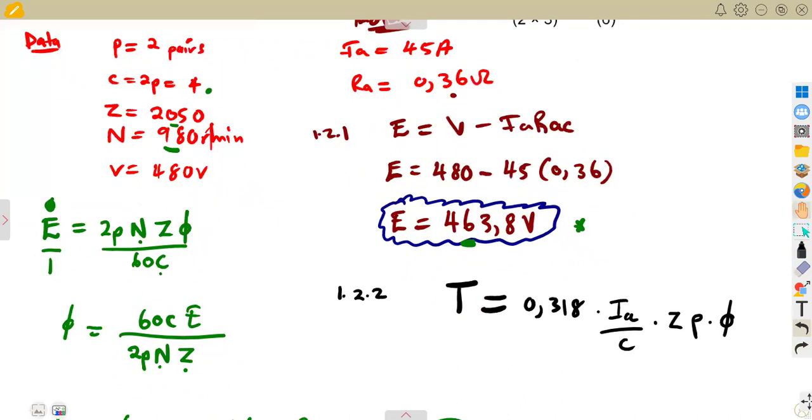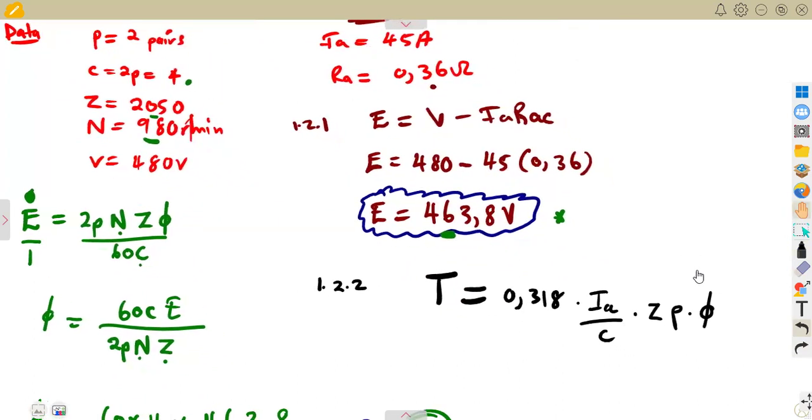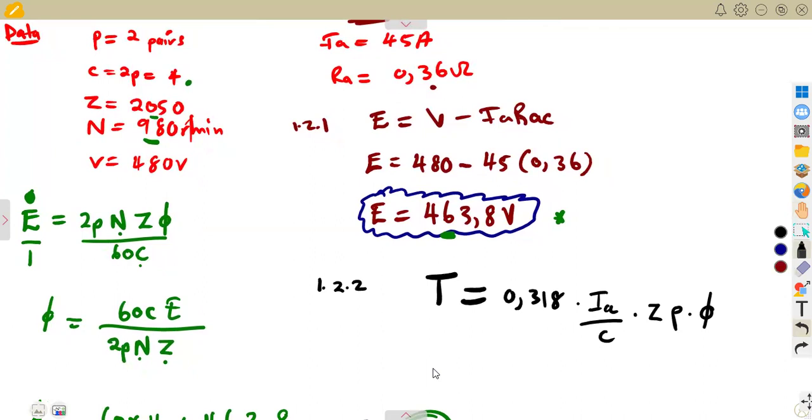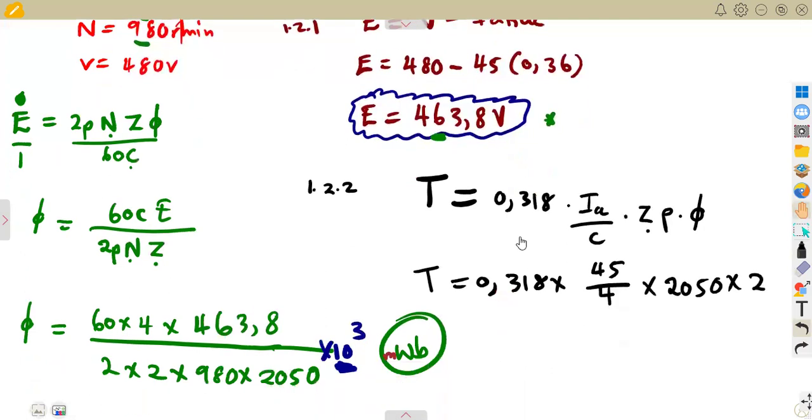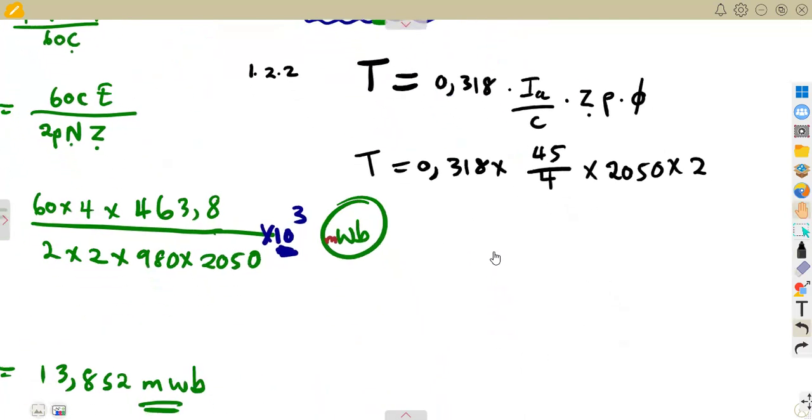0.318 times the armature current over C, times Z, times the pole pairs, times the useful flux. It can be used and that's we can have our torque, which is the useful torque. So that was going to be 0.318 times the armature current which is 45 amps, over C which is 4, times the Z the armature conductors 2050, times the pole pairs being 2.